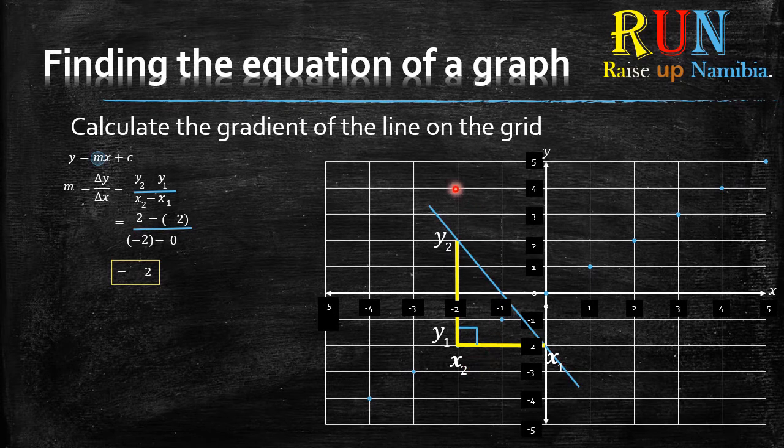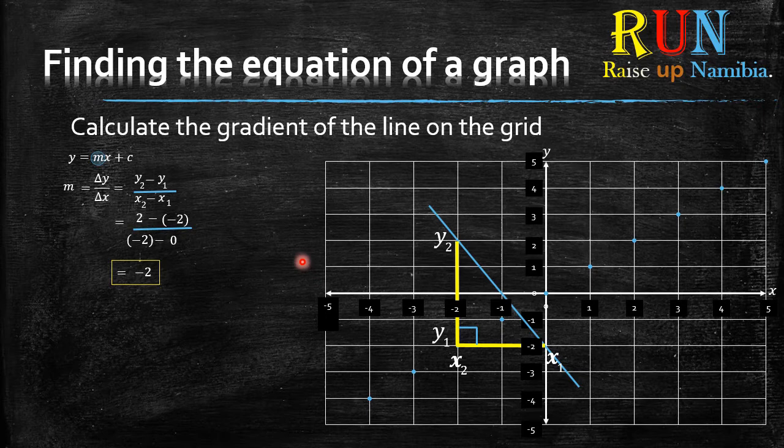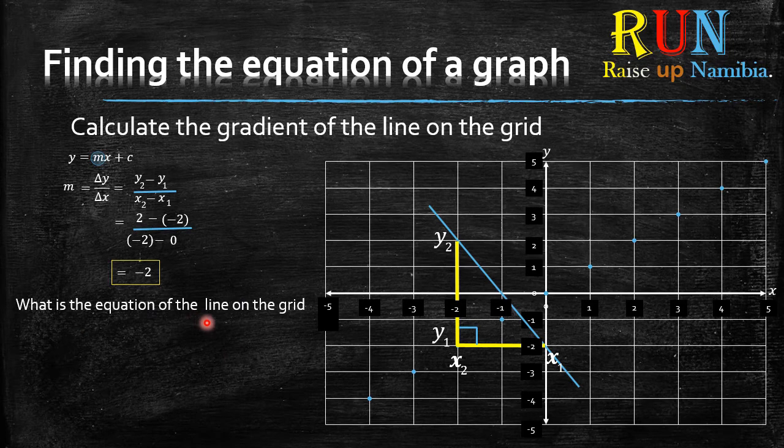If you take a look at this example, we're going to use the same example from the previous video as well. But now we're going to look for the equation. In the previous video, we were looking for the gradient. So if I ask what is the equation of the line on the grid, this blue line, what is that equation?